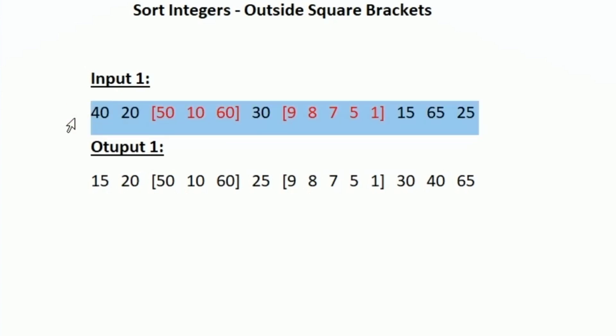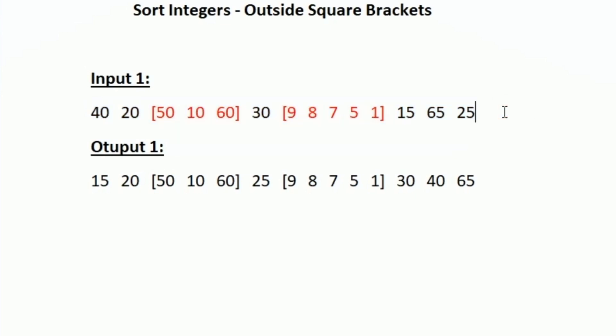To solve this problem, the logic we will use is: first, accept the input in string format. Then using the strtok function, we will separate each space-separated token. Next, we apply the selection sort technique, adding extra code to determine whether we are currently inside or outside the square bracket — because we should only apply selection sort outside the bracket. Now let's write a C program for this.